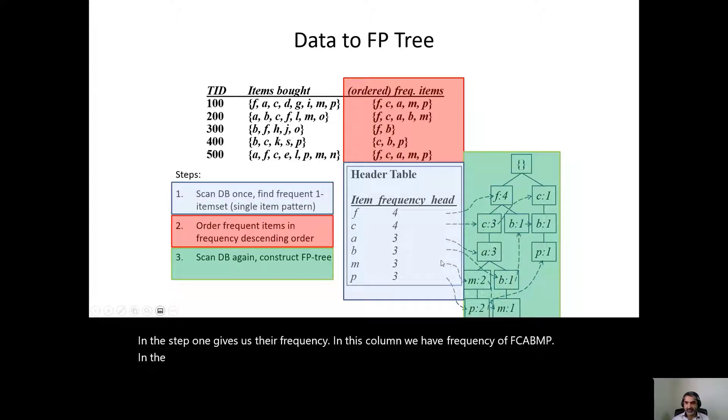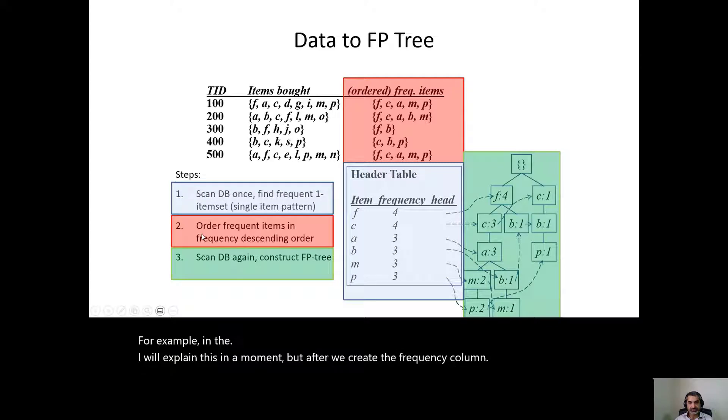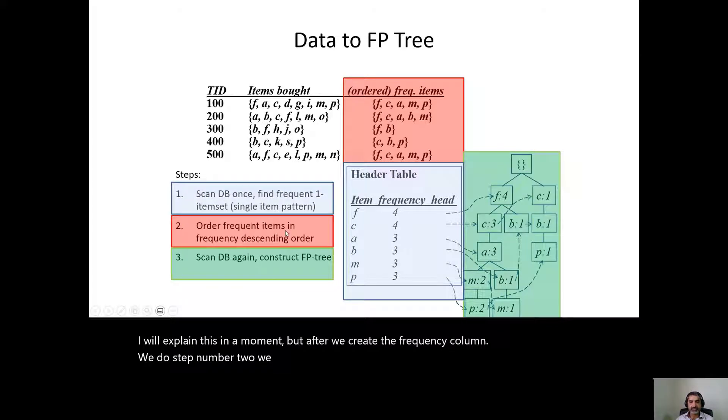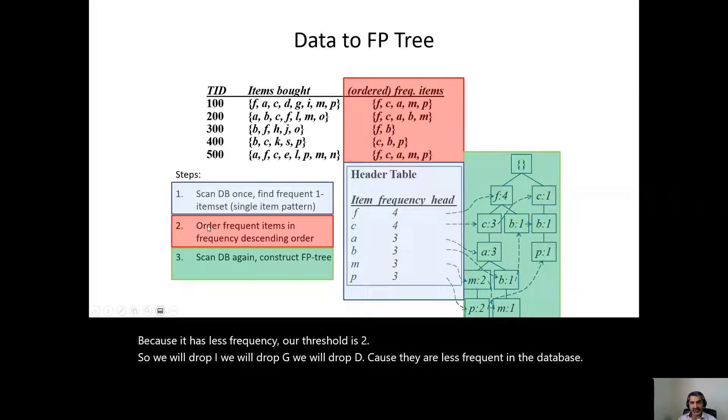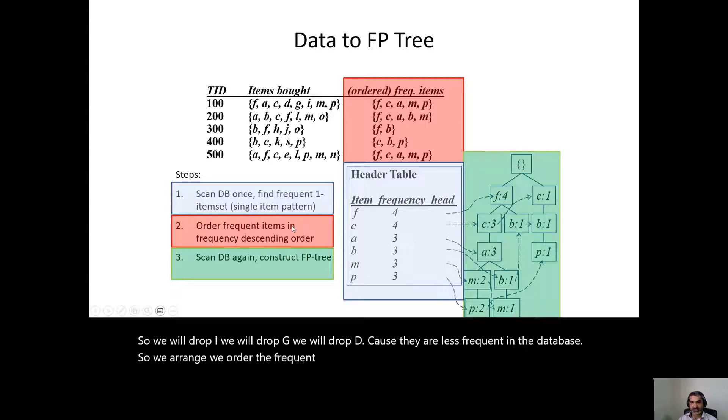In the third column, we have a node that leads us. I will explain this in a moment, but after we create the frequency column, we do step number two. We order frequent items in the frequency descending order. So for this transaction, I is not interesting because it has less frequency. Our threshold is 2, so we will drop I, we will drop G, we will drop D because they are less frequent in the database. So we arrange, we order the frequent items after filtering the uninteresting ones in descending order.